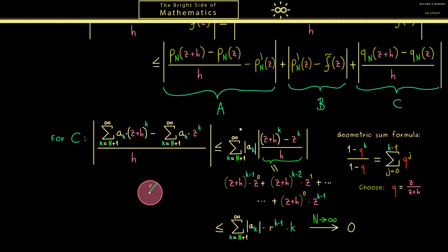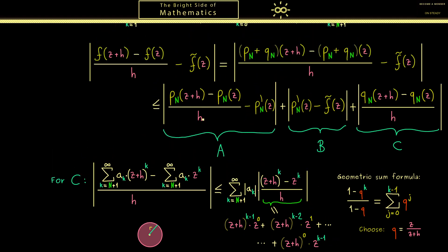To summarize the argument: fix a point z and a small h, and let epsilon be arbitrary and greater than 0. Choose N large enough so that part b and part c are both smaller than epsilon. Then take the limit h to 0: part a vanishes, and we have the limit being smaller than epsilon. Since epsilon is arbitrary, the limit is 0. This concludes the whole proof that f is complex differentiable with derivative f-tilde.